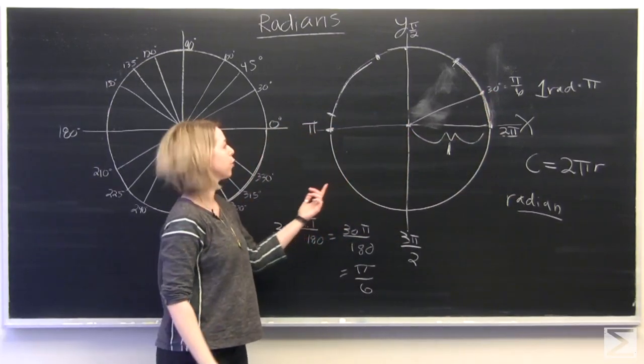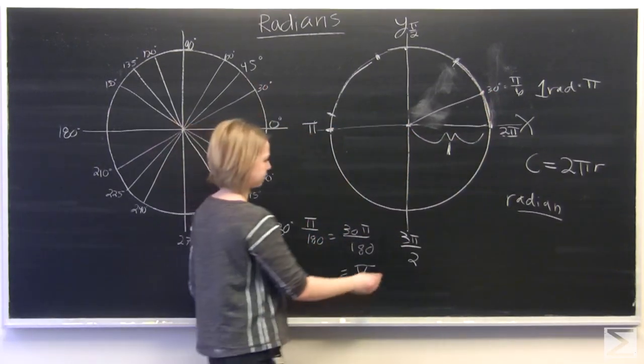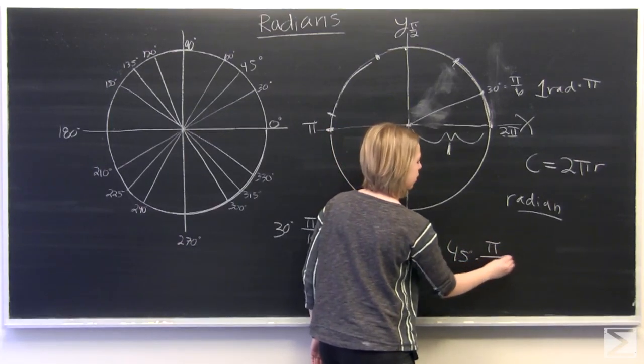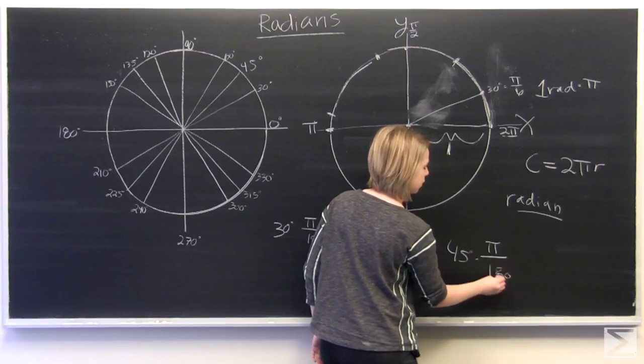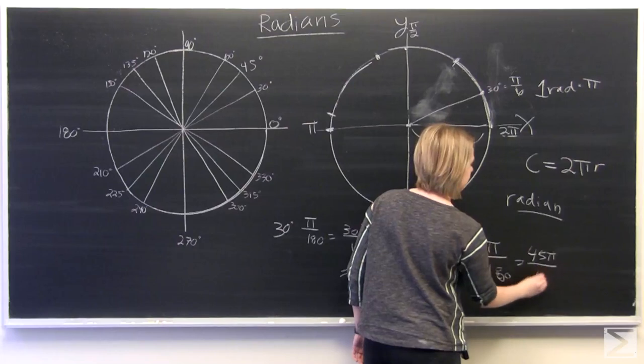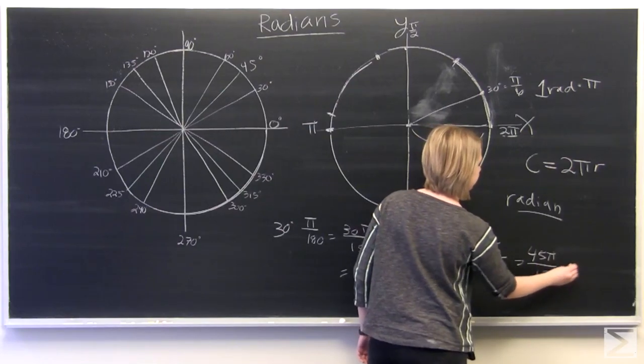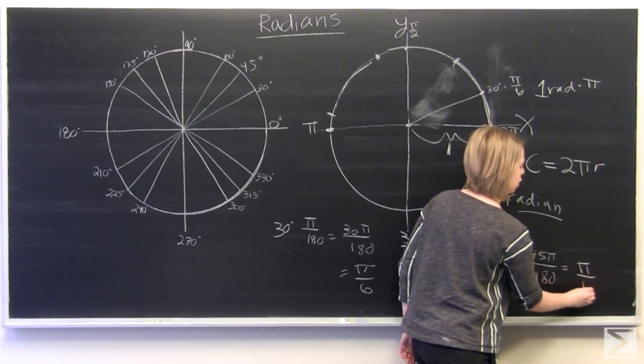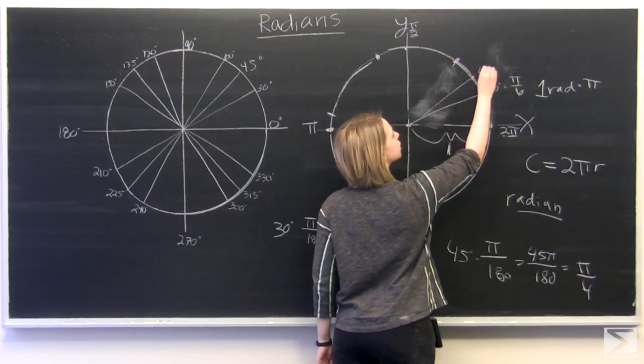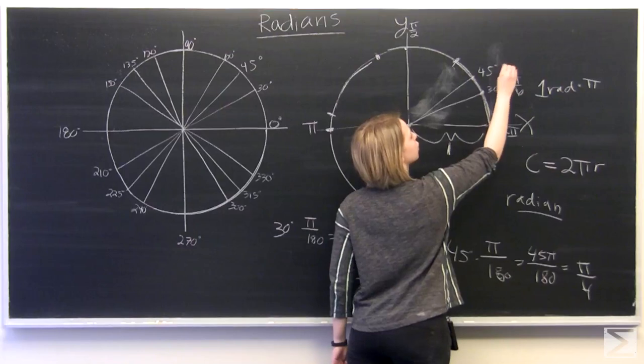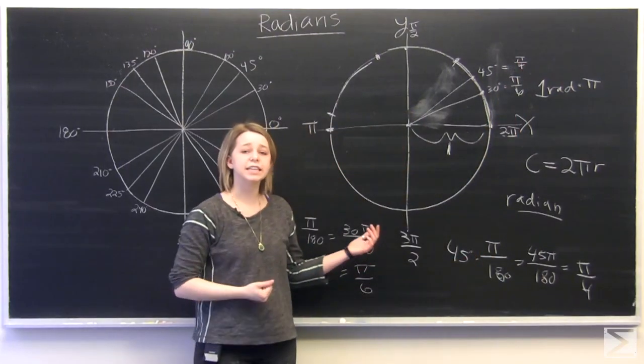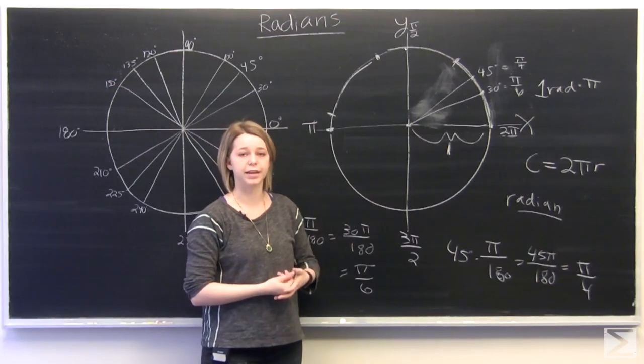We can do the same thing for 45 degrees. So we'll take 45 degrees and multiply it by pi over 180, and we'll get 45 pi over 180, which is equal to pi over 4. And so we know that at 45 degrees, we're looking at pi over 4 radians. And you can use this technique to fill in the rest of your unit circle with radians.